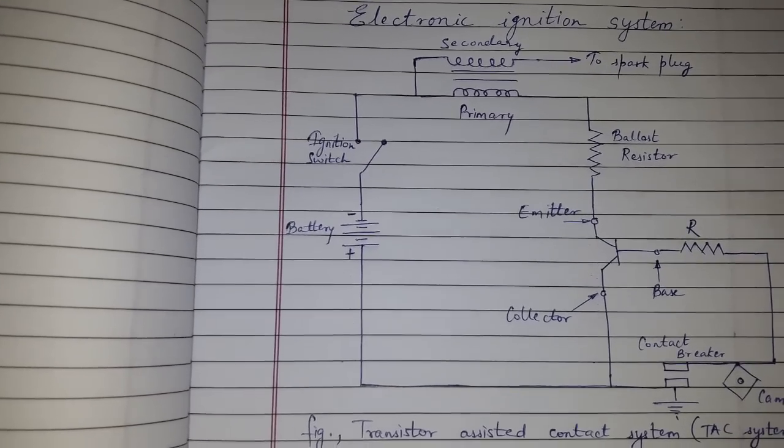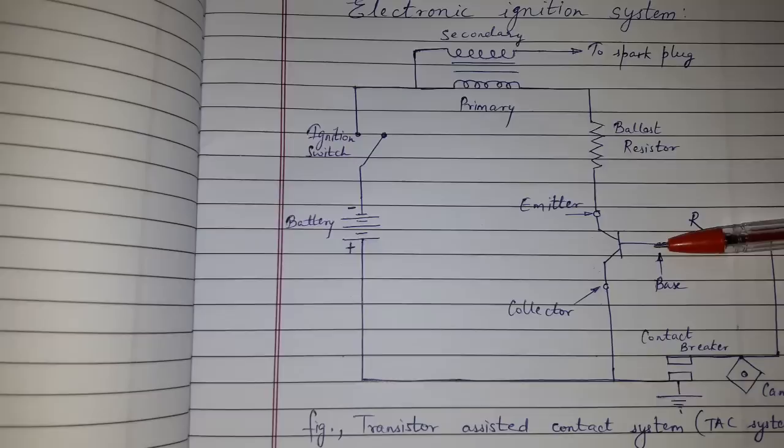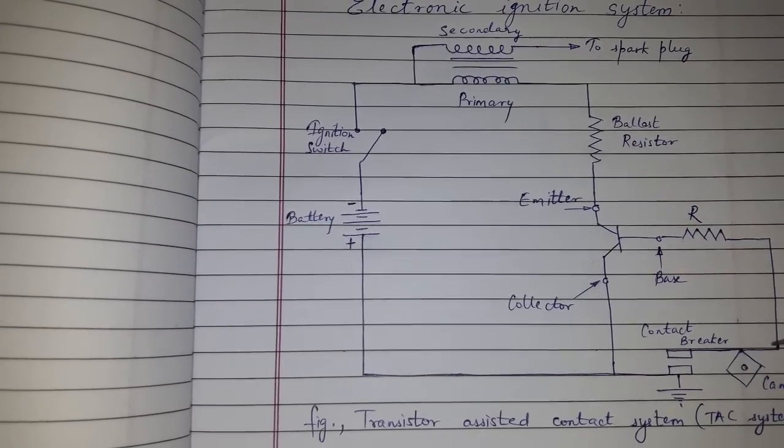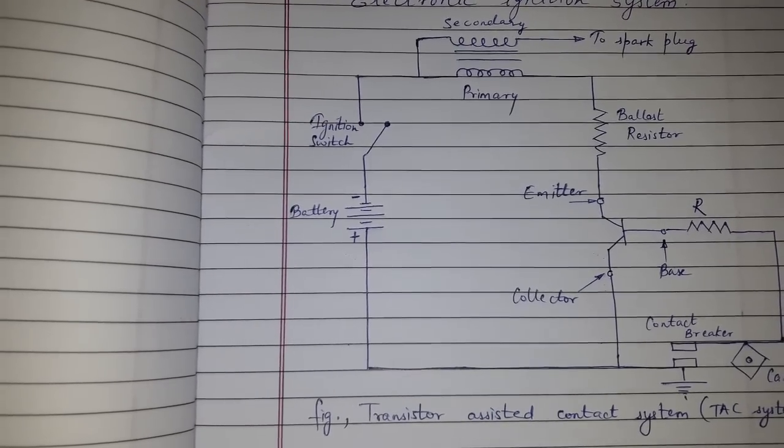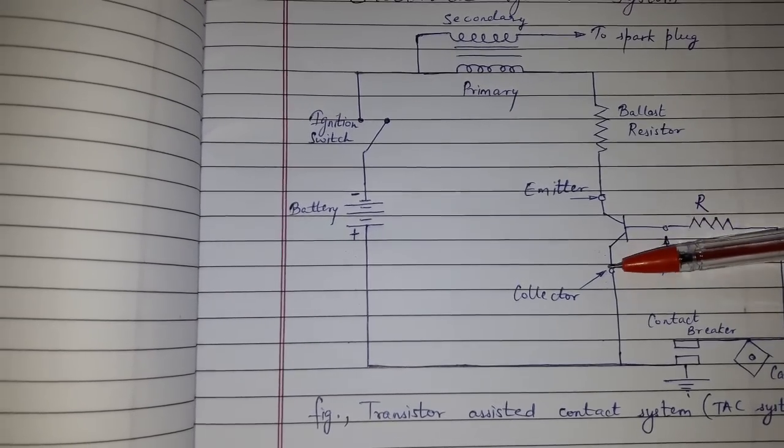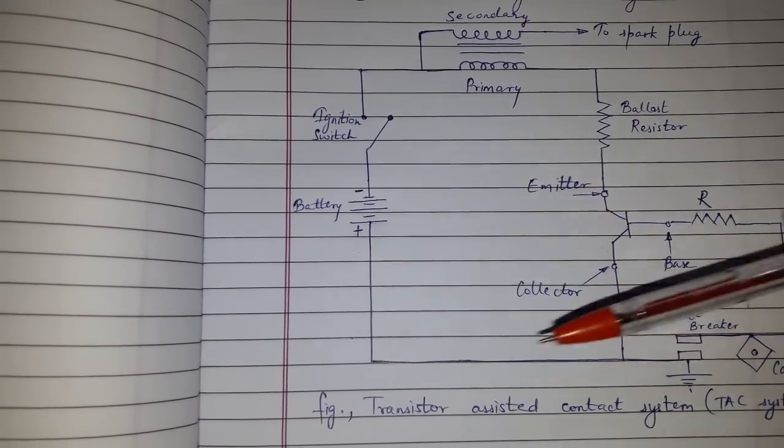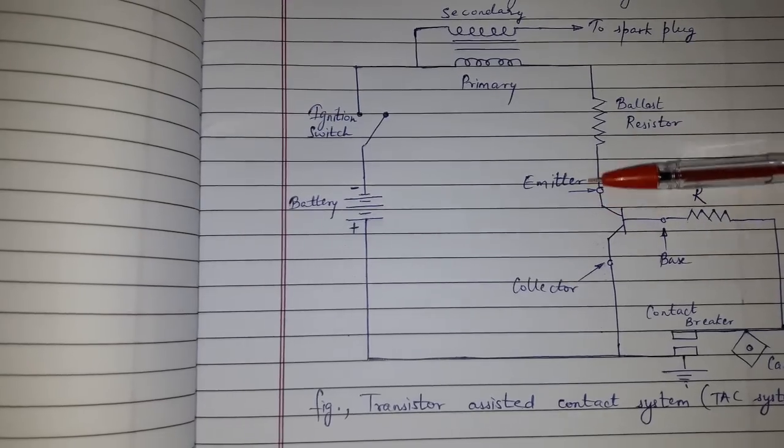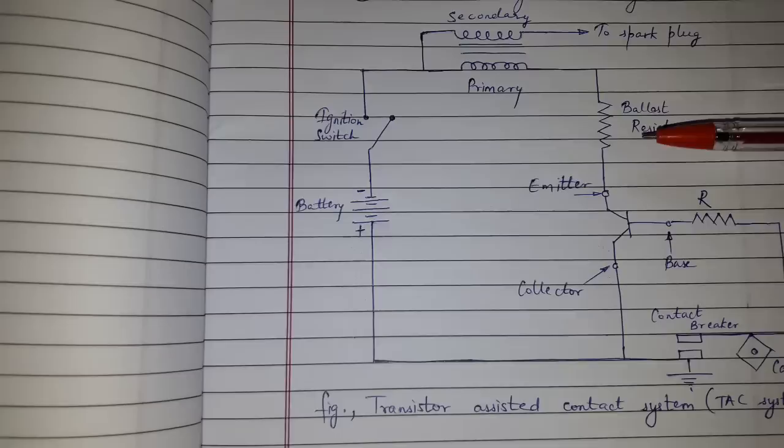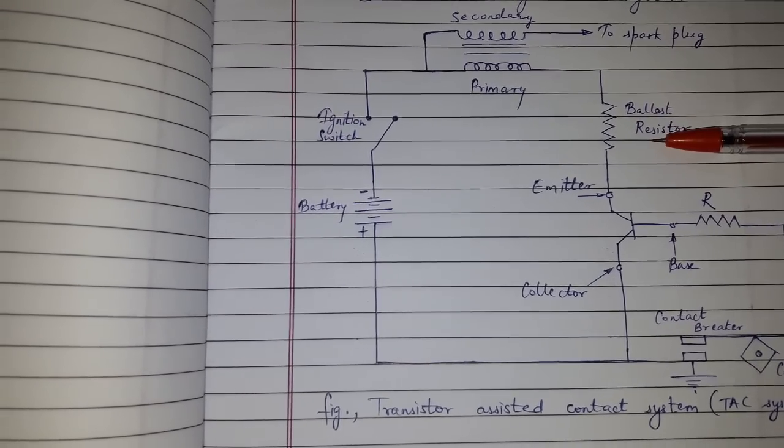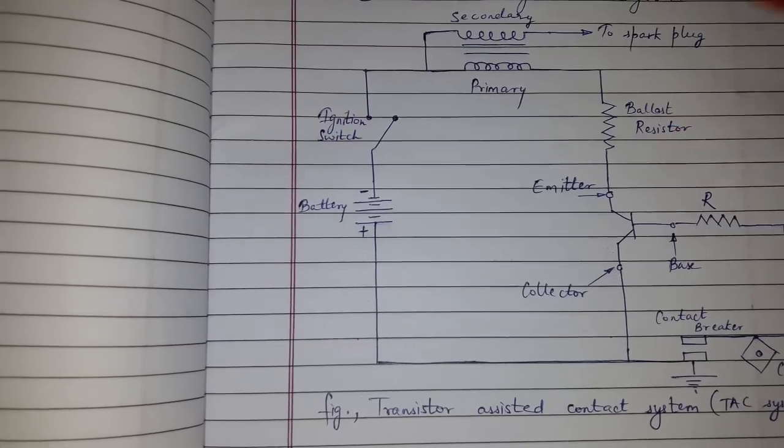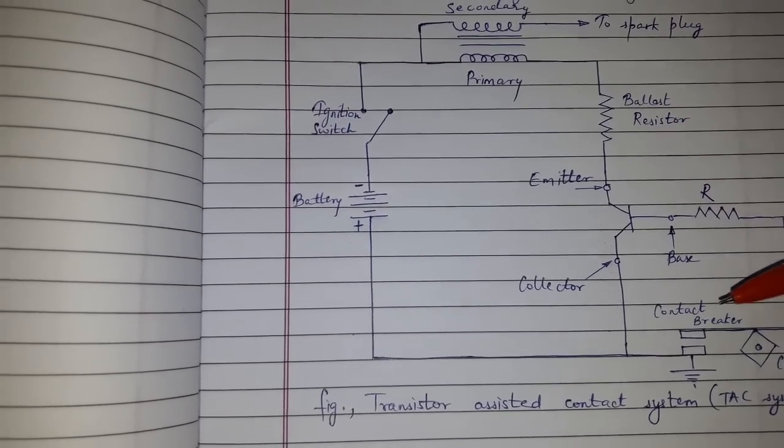The base of the transistor is connected to the contact point through a resistor. The collector is connected to the battery. The emitter is connected to the primary via ballast resistor. The ballast resistor keeps the current limited.